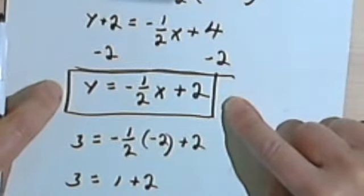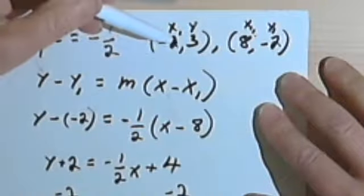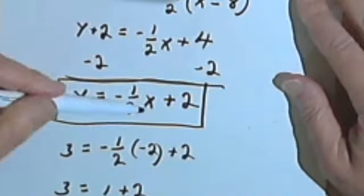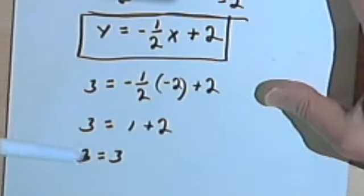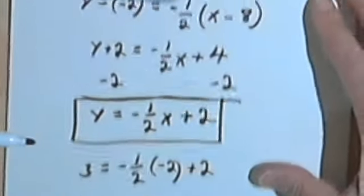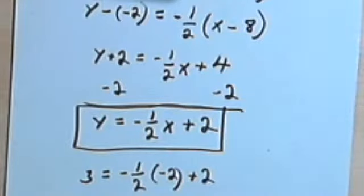You can check the equation by taking the ordered pair that you didn't use and plugging that in for x and y, and making sure that the equation balances. Okay? So that's all there is to it. Take care, and I'll see you next time.